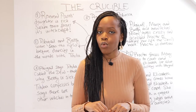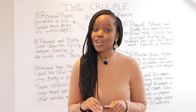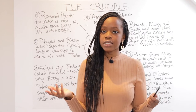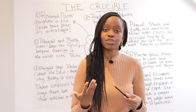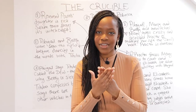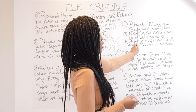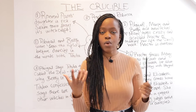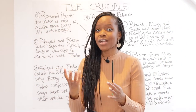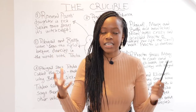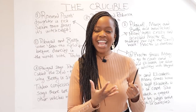Abigail tries to deflect the confession, and the judges bring in Elizabeth to confirm whether the adultery took place. Not knowing that John has already confessed, Elizabeth lies for the first time in her life to protect her husband's name, saying there was no adultery. This seals both their fates — John Proctor is arrested. Meanwhile, Abigail, Mercy, and Betty begin acting as if possessed to distract from Abigail's own sin.